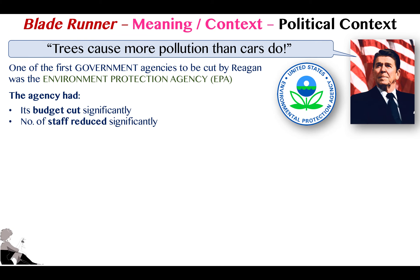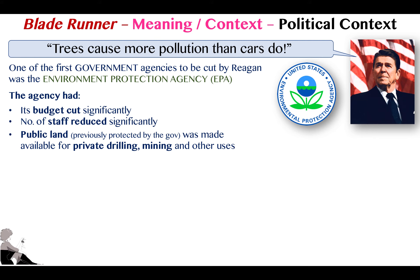The specific points we can focus on in our essay include the Environmental Protection Agency and the destruction of natural habitats. One of the first things Reagan did when he came into office was deregulate and try to dismantle the EPA, whose role is to protect natural environments including state and national parks. With deregulation, the EPA had budget cuts, staff significantly reduced, and public lands such as national parks were made available for private drilling and mining — effects we're still seeing now with the fracking debate.